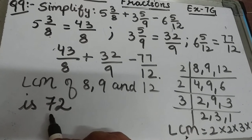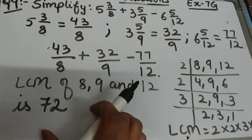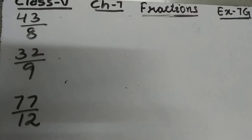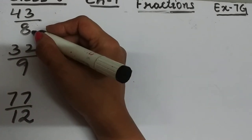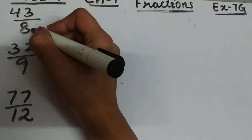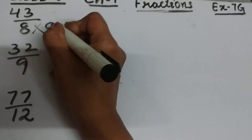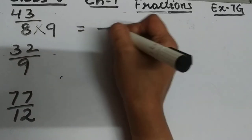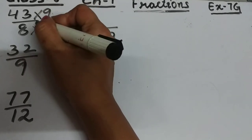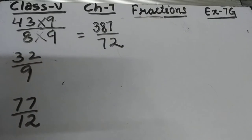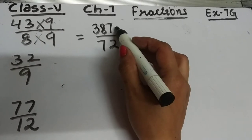Now we have to make the denominator of all these fractions 72. By which number should I multiply 8 to get 72? If I multiply it by 9, then the denominator will be 72. So I will multiply the numerator also by 9. 43×9=387, so this will be 387/72.